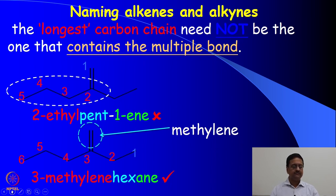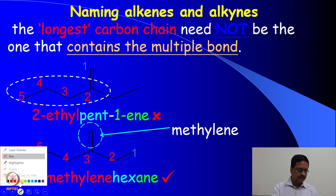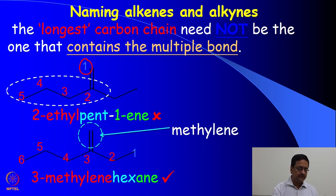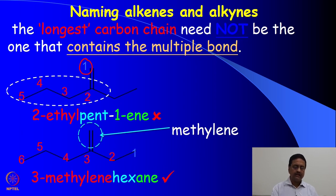The first point we should remember is that we need to find the longest carbon chain, and that longest carbon chain need not be the one which has the multiple bond. In this particular case you have a molecule where you can number the atoms starting at the point where the double bond starts, numbering 1, 2, 3, 4, and 5 as shown in the upper structure. But in this case the longest chain is neglected.